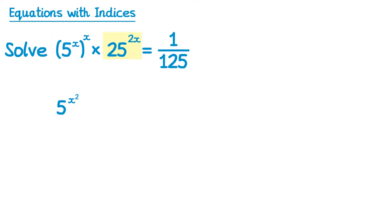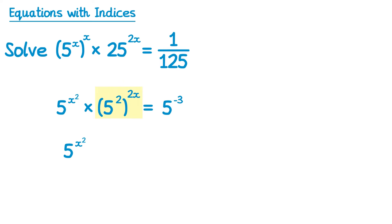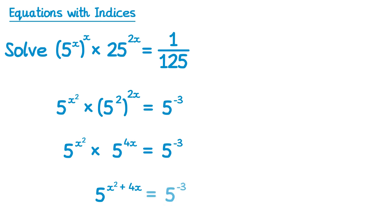For the next bit, we've got 25 but we know 25 is 5 squared, so we can introduce a bracket: this is the same as 5 squared raised to the power 2x. And for the final bit, we've got 1 over 125 — 125 is 5 cubed, but since it's the reciprocal this is 5 to the power negative 3. So we've got 5 to the x squared, and for this part we can use the bracket-to-the-power law: 2 times 2x is 4x, so this is 5 to the power 4x, equals 5 to the power negative 3. We can now use the multiplication rule and add the indices, so this is 5 to the power x squared plus 4x, equals 5 to the power negative 3.